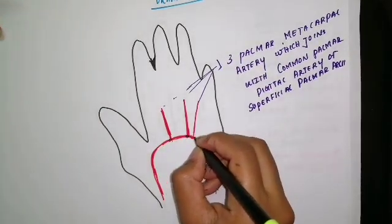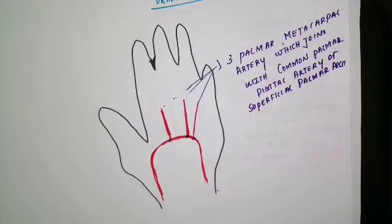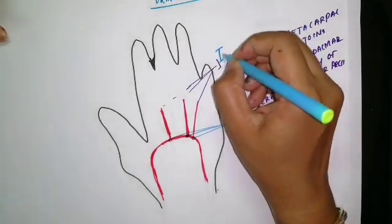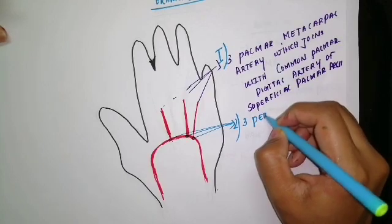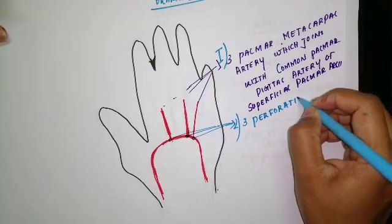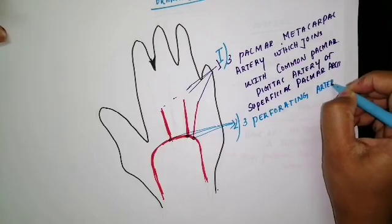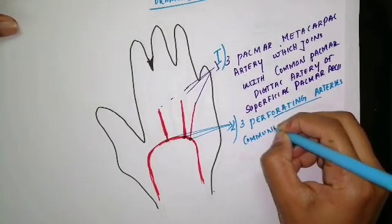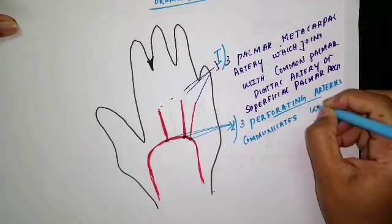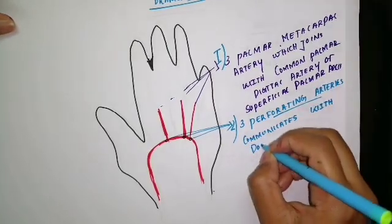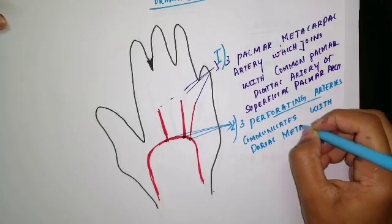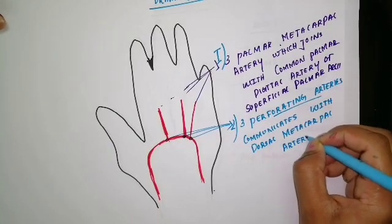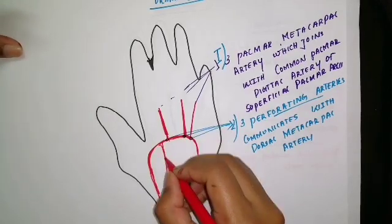The second branch: it has 3 perforating branches. These 3 perforating arteries communicate with the dorsal metacarpal arteries.